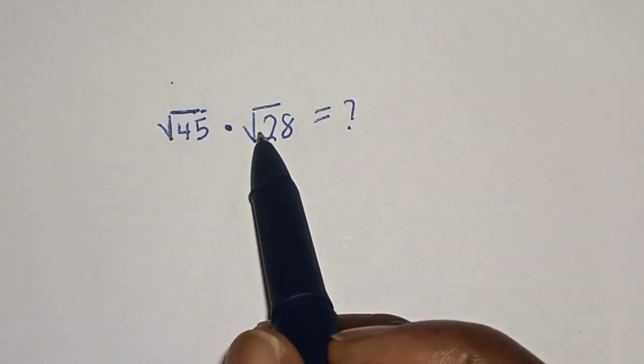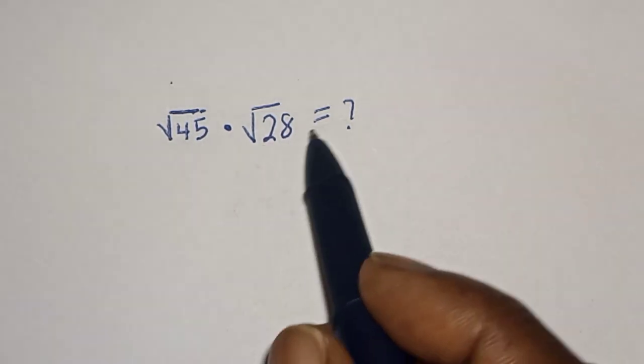Square root of 45 multiplied by square root of 28 is equal to what?